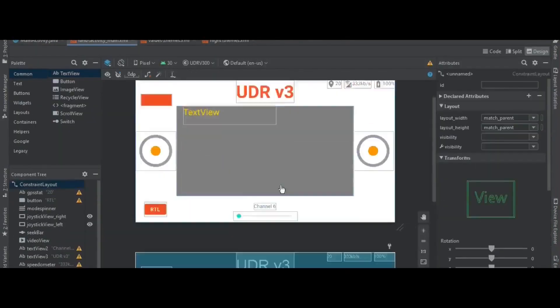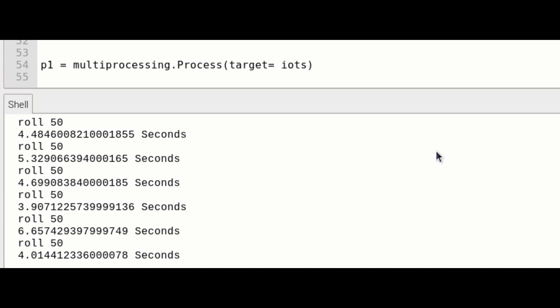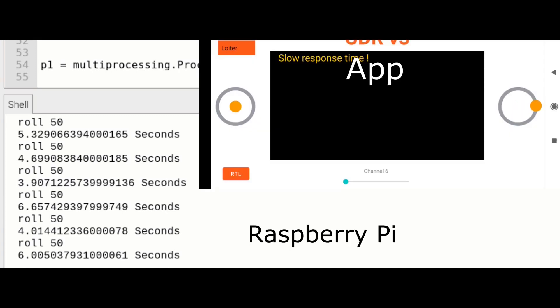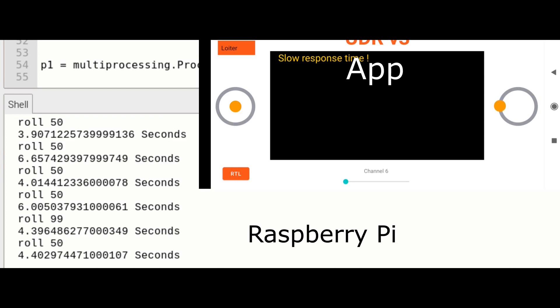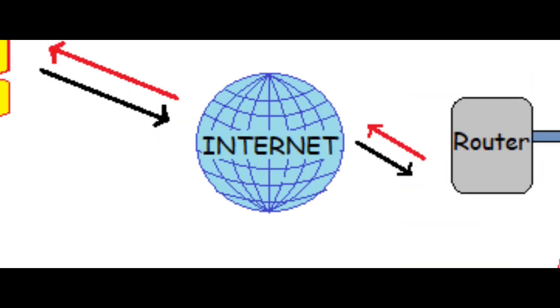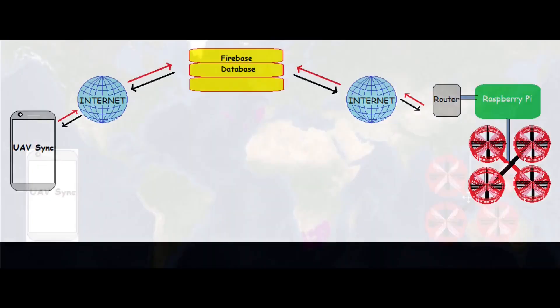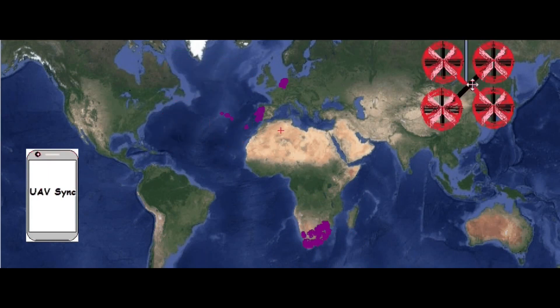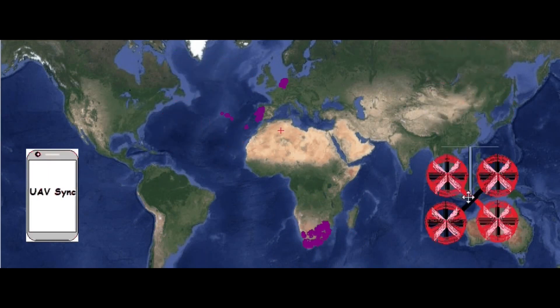Then I registered to Google Firebase database and created the database hierarchy accordingly. Finally I forwarded the values to the database, then tested the communication. Here something confused too many viewers — let me clear it. The phone is connected to Firebase through the internet, and the drone is also connected to Firebase through the Raspberry Pi then through the router. So the internet bridges the gap, and for that you can control it from anywhere in the world where an internet connection is available.